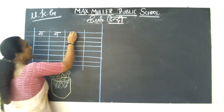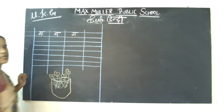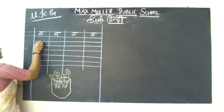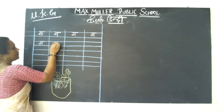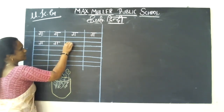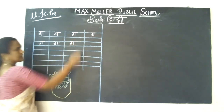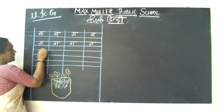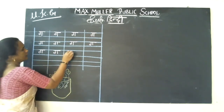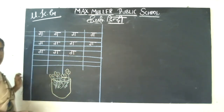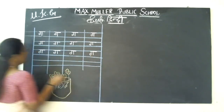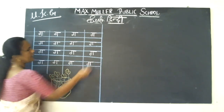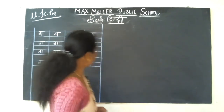Ga say, Gamala — flowerpot. Here, you have to say and write. Standing line, half circle, one more standing line, then slipping line. Like this, neatly you have to write. Touch the line and write neatly. Ga say, Gamala — flowerpot. Again in the next page.